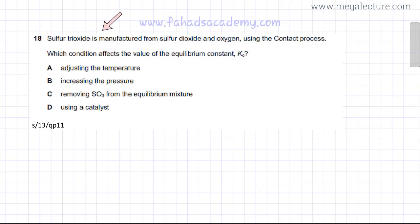The following question reads that sulfur trioxide is manufactured from sulfur dioxide and oxygen using the Contact process. It's an equilibrium reaction of the Contact process: SO2 is reacting with O2 and is in equilibrium with SO3. All of them are gases.